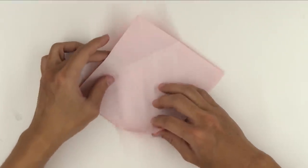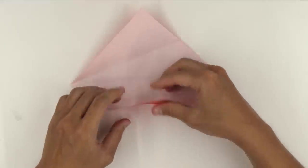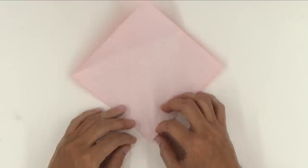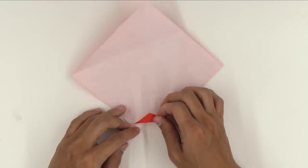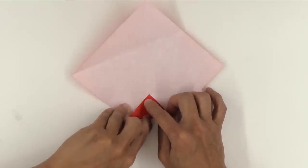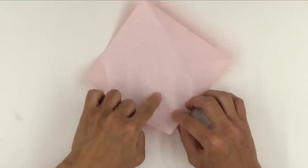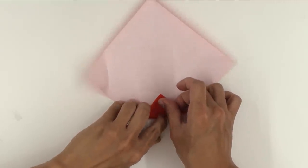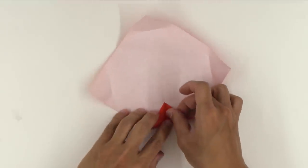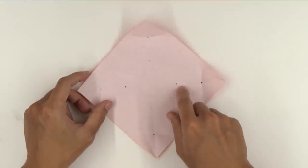And do the same thing to this direction. So, the folds are going to look like this. Now, fold the corner of the paper up to the mark we just made. And again, you're just going to pinch the middle. Keep doing this on all directions. And you should have, in the end, all these marks.